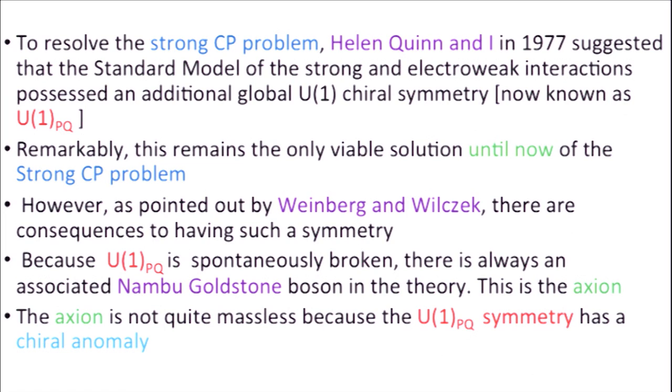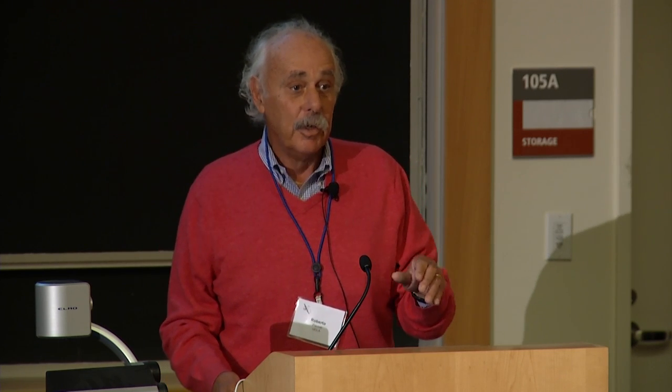What was pointed out soon after we wrote our paper by Weinberg and by Wilczek was that this symmetry, because it's spontaneously broken, always has a Goldstone boson — not quite a Goldstone boson, but a very light scalar — and that's the axion. So if you want to prove that this is actually the way things work, you at some point have to find axions.